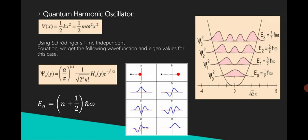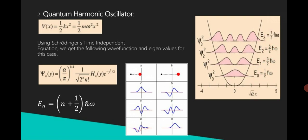Now, the quantum harmonic oscillator. As we know, V(x) = ½kx², where k is the propagation constant, which equals ½mω²x². Using Schrödinger's time-independent wave equation, we get the energy eigenvalues: Eₙ = (n + ½)ℏω — analogous to a pendulum. The probability distributions ψ₀, ψ₁, ψ₂, ψ₃ for the quantum harmonic oscillator are shown here.